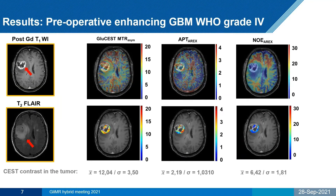Our results from the enhancing tumor, as observed on the post-gadolinium T1, showed an overall increase in glutamate-weighted CEST contrast in the contrast-enhancing rim, as visible on the bottom row. And as expected, we also observed an overall increase in APT contrast and a decrease in NOE. It is interesting to notice this increase and decrease in contrast respectively overlaying the contrast enhancement on the post-gadolinium T1.